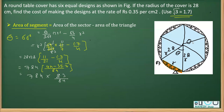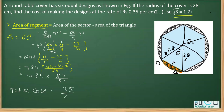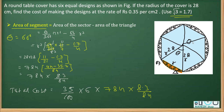We got the area of one design. Since there are six such designs and we also need to find the cost, the total cost equals: area of one design multiplied by 6, then multiplied by the rate. The rate is 0.35 rupees, which is 35 over 100. So all together: 35 over 100 times 6 times 784 times 8.3 over 84. The area of one design is the expression written, and after reduction we will get the final answer in rupees.